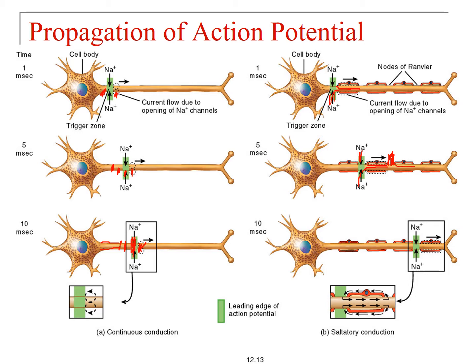You can see sodium inflow at one node of Ranvier and diffusion of sodium down to the next. In the blow-up at the bottom, sodium comes in and diffuses downward. At the bottom, leak channels let it back out, creating a current flow around like this. This is saltatory conduction, and we'll go into more detail a little later.